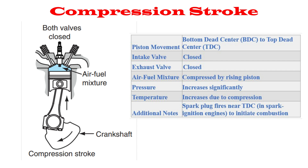If you light a puddle of gasoline on fire in open air, it does not produce power. If it is confined in a cylinder, however, usable power can be produced. Compressing the mixture of air and fuel into a smaller area makes it easier to burn. The compression stroke begins at BDC after the intake stroke is completed. As the piston moves toward TDC, both valves are closed.